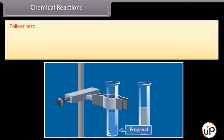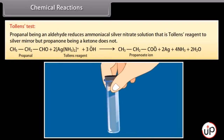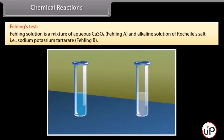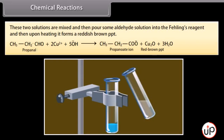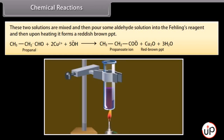Tollens test: propanol, being an aldehyde, reduces ammoniacal silver nitrate solution (Tollens reagent) to a silver mirror, but propanone, being a ketone, does not. Fehling's test: Fehling's solution is a mixture of aqueous copper sulfate (Fehling's A) and alkaline solution of Rochelle's salt, sodium-potassium tartrate (Fehling's B). These two solutions are mixed and then some aldehyde solution is poured into the Fehling's reagent and upon heating it forms a reddish-brown precipitate.